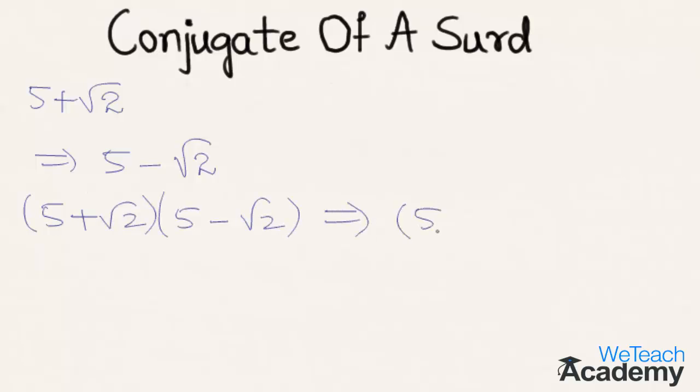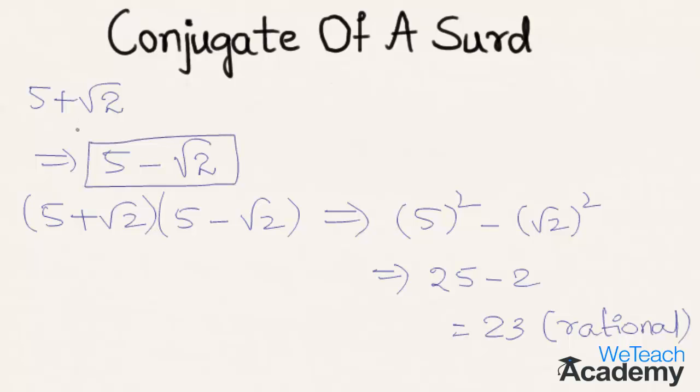So here we get 5 square minus root 2 whole square. 5 square is 25 minus root 2 whole square is 2. So we get 25 minus 2 which equals 23, a rational number. So we can say that 5 minus root 2 is a conjugate surd of 5 plus root 2.